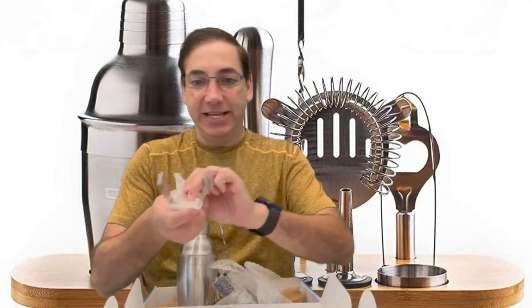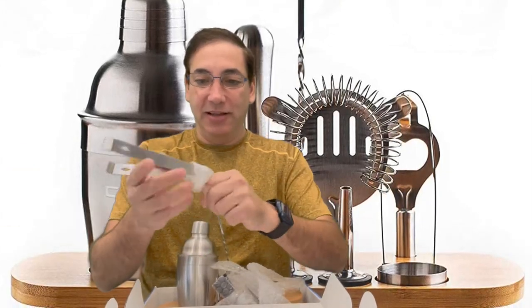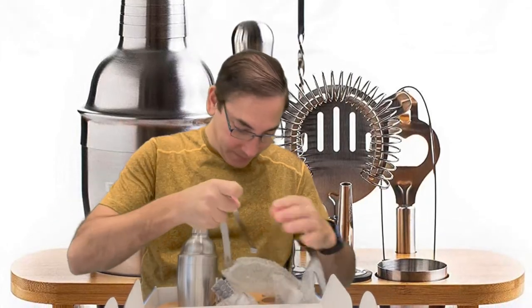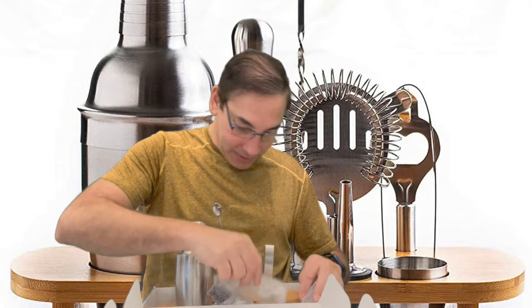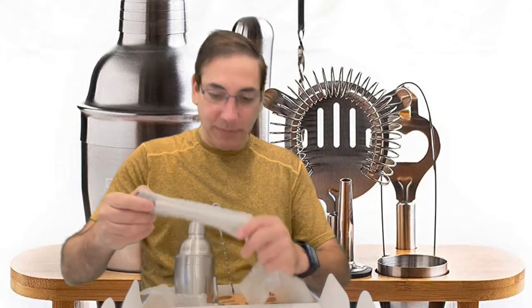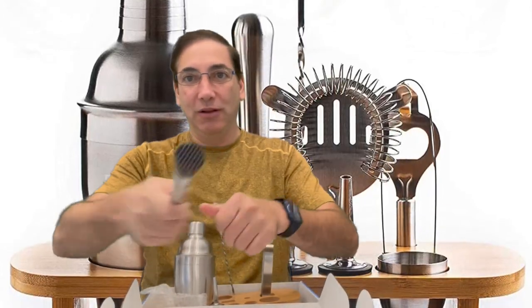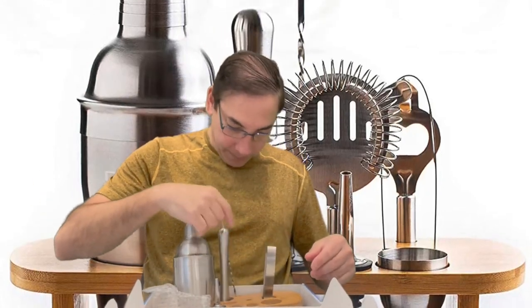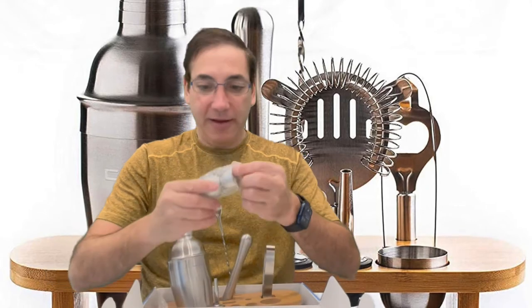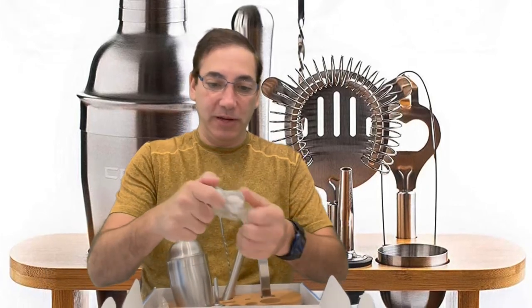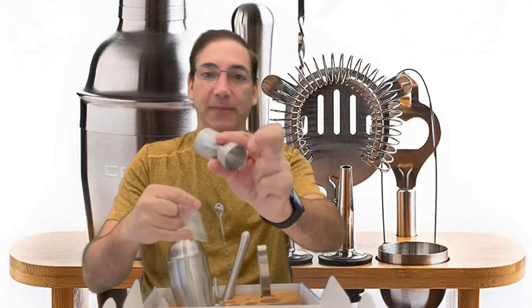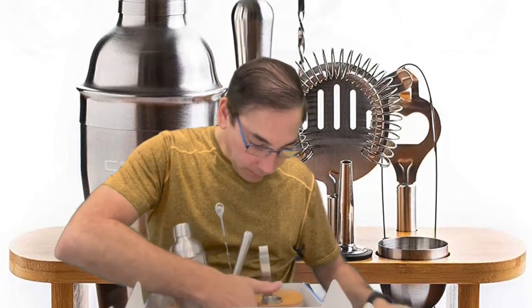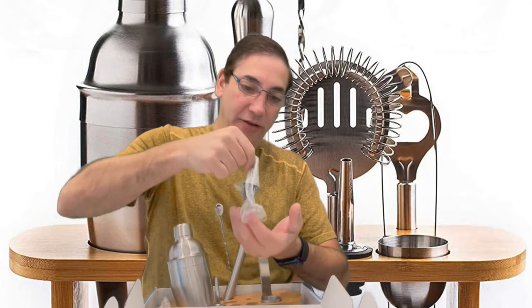We have some tongs. We have what I think is called a muddler where you can squish down the stuff in it. We have the little measuring jigger so you can measure the small or the big pour. We have another pourer.